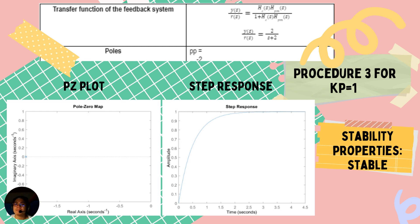For Kp = 1, using MATLAB functions, we defined the simplified transfer function with poles at negative 2. The transfer function for this is 2/(s+2). The PZ plot and step response suggest that the transfer function is stable.